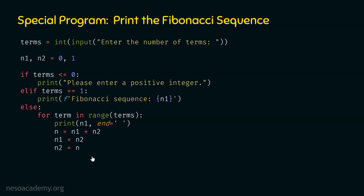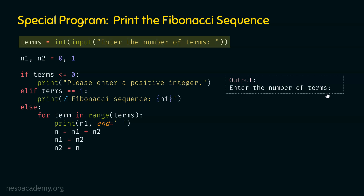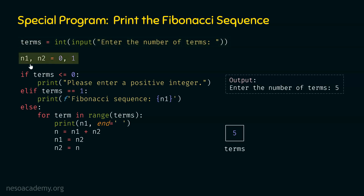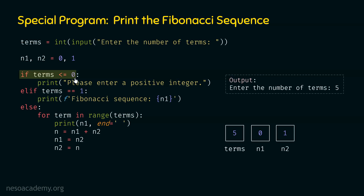Let's execute this program line by line. We execute: terms = int(input('Enter the number of terms')). The user has entered five, so the terms variable points to the object with value five. Then we declare n1 = 0 and n2 = 1. We check: is terms less than or equal to zero? No — terms is five, a positive value. Therefore that statement will not be executed, and the elif statement will also not be executed. Hence we move to the else block.